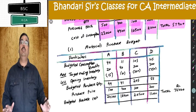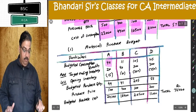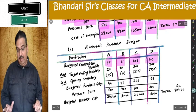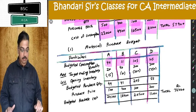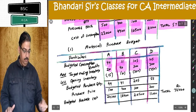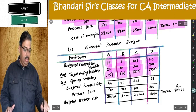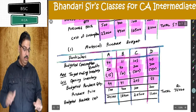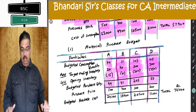Consumption is taken from B part. Add target ending inventory — again inventories are in the second table for A, B, C, D separately: 20, 40, 300, 200. Less opening inventory: 15, 10, 200, 250. Once I adjust, I get budgeted purchase quantity: 49, 41, 205, and 55.